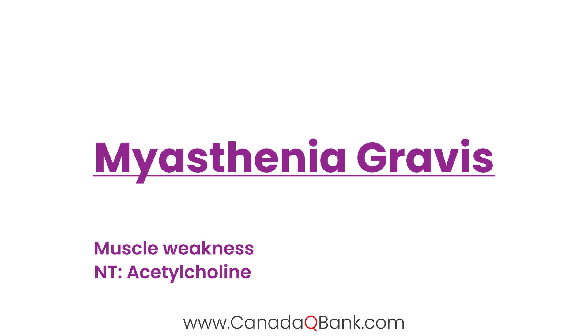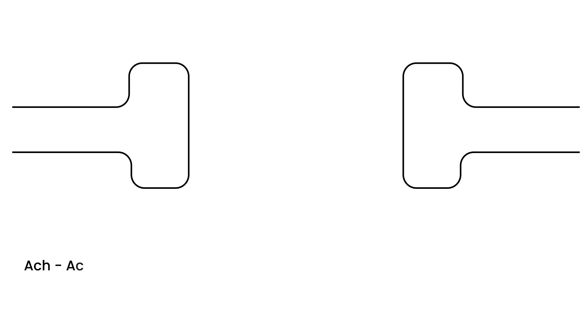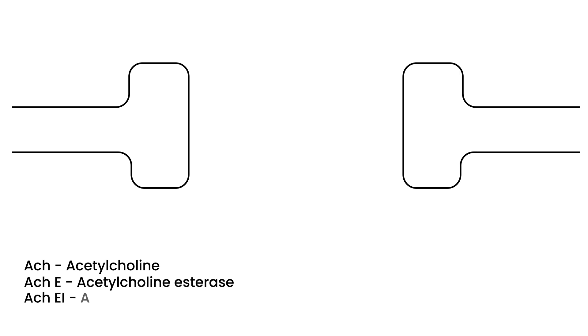Before we get into everything, it's important to first understand what that even means, and we'll start with the diagram. A lot will be presented in this diagram, so we'll use some abbreviations. ACH will be acetylcholine. ACHE will be acetylcholine esterase. ACHEI will be acetylcholine esterase inhibitor. And ACHR is the acetylcholine receptor.